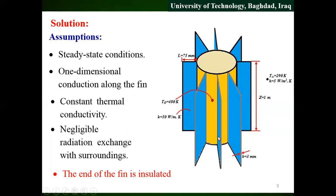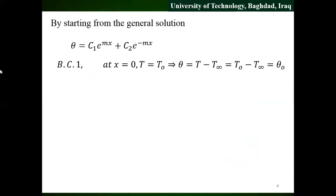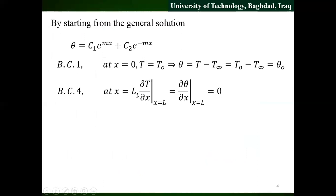This is the end — this one. Why is it here? Because I need to pay attention to that boundary condition. By starting from the general solution, the boundary condition at x equals zero is T equal to T naught — theta is T minus T infinity. We can use T naught.